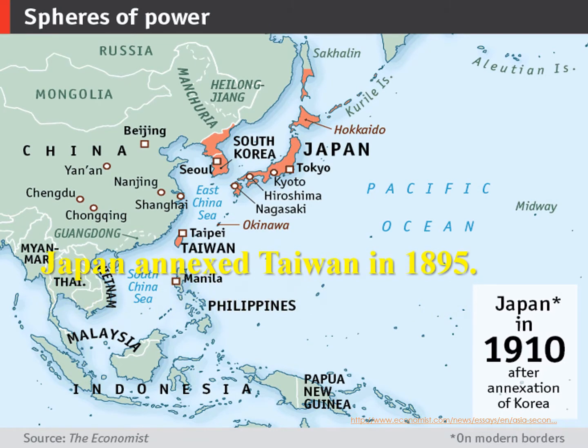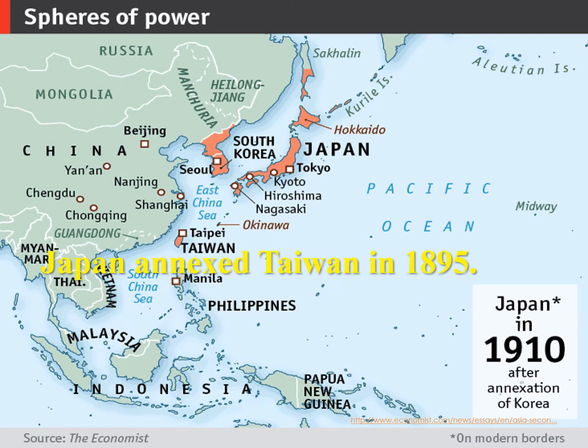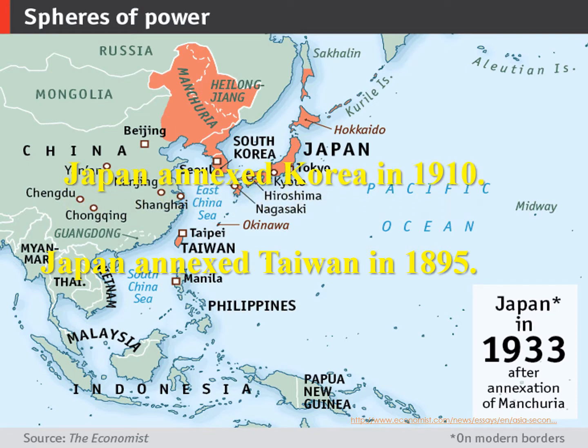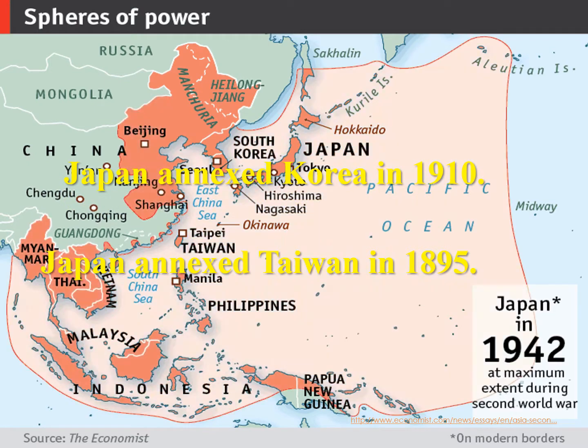Japan annexed Taiwan in 1895. Japan annexed Korea in 1910.